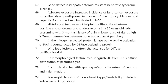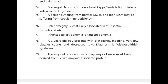In chronic viral hepatitis, grading refers to the extent of necrosis and inflammation. Mesangial deposits of monoclonal kappa or lambda light chain is indicative of amyloidosis. A person suffering from normal MCH and high MCV may be suffering from cobalamin deficiency.